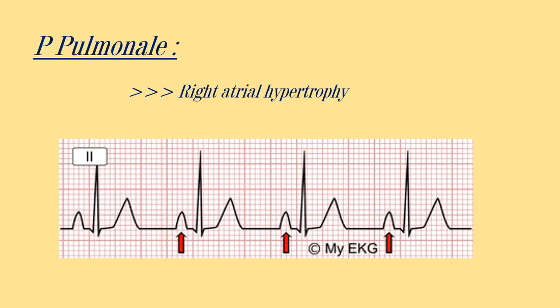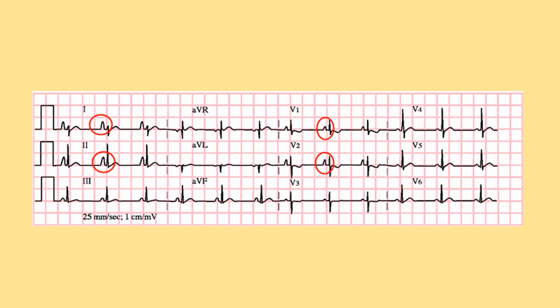P-pulmonale indicates right atrial hypertrophy, which occurs with pulmonary hypertension. We can see the P wave is taller than 2.5 mm in height, visible in leads 1, 2, V1, and V2.